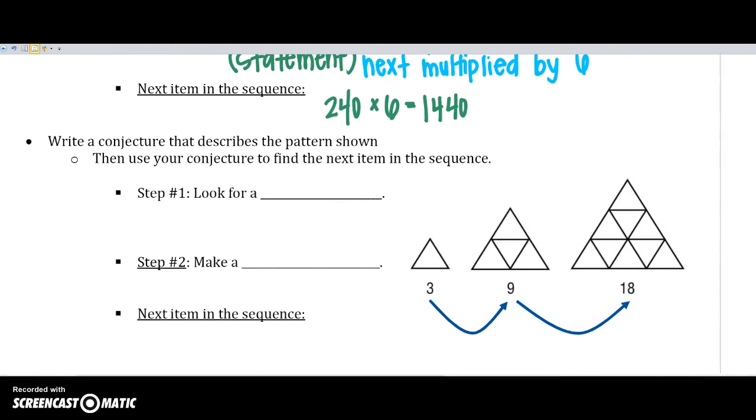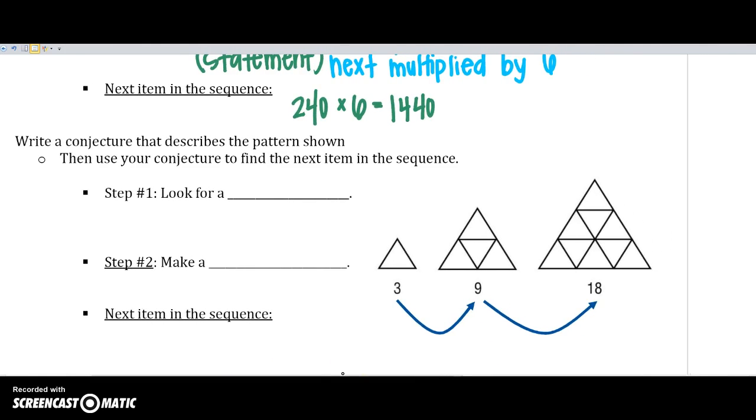Another type of example to look for patterns is with figures. So use your conjecture to find the next item in the sequence. So first step, look for a pattern. Always look for a pattern first. We have to do that before we can make a conjecture. So 3 sides, and then my next item is 9 sides. The next is 18, okay.